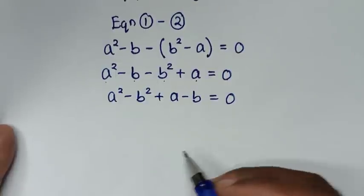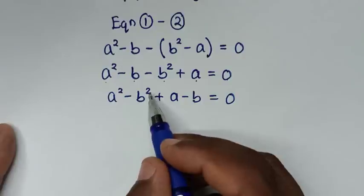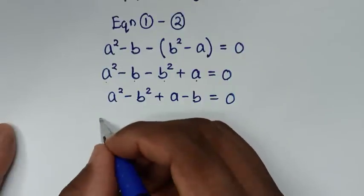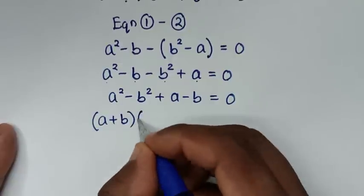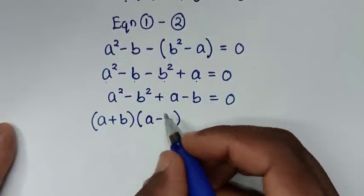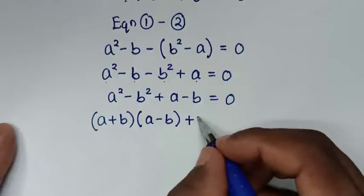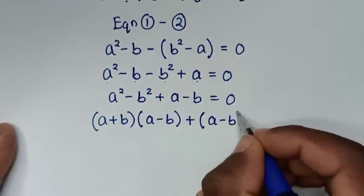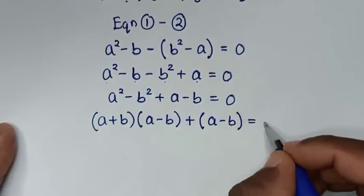Now, a² minus b² is in the form of a difference of squares, so it factors as (a plus b)(a minus b). Adding the remaining term, we have (a plus b)(a minus b) plus (a minus b) equals 0.